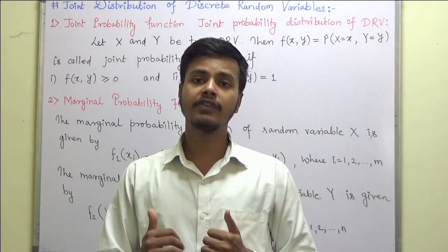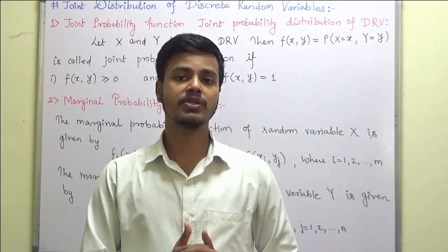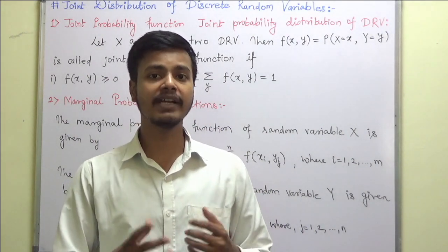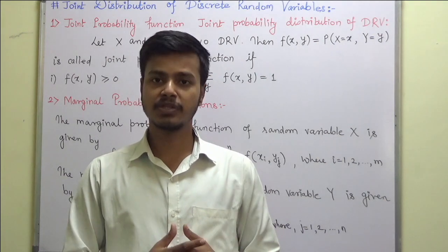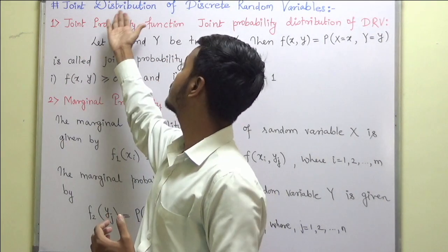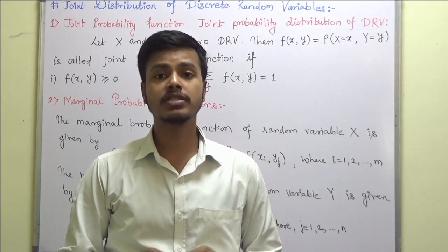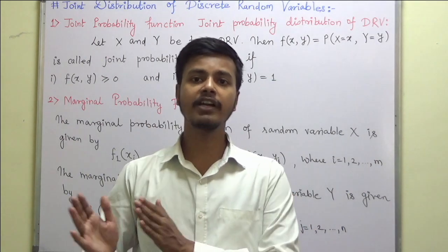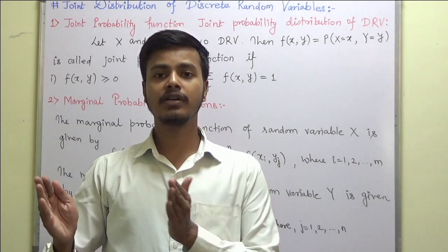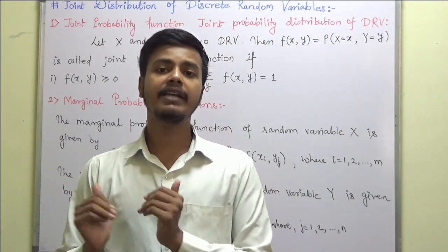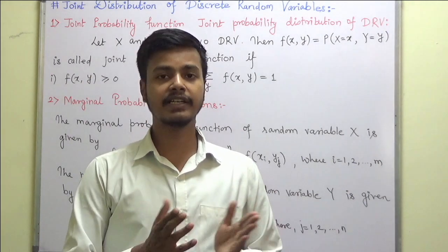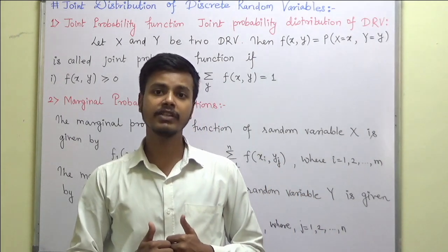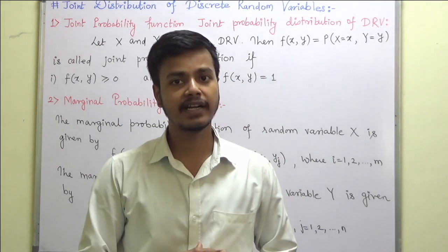But now onwards we will be concentrating on joint distribution. Whenever we talk about joint distribution we need at least two random variables. Under this topic of joint distribution we will have two subtopics: joint distribution for discrete random variable and joint distribution for continuous random variable.